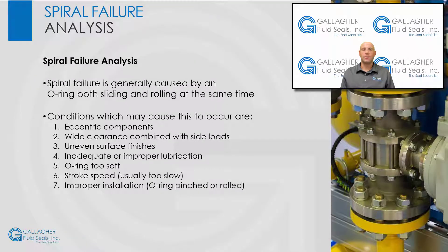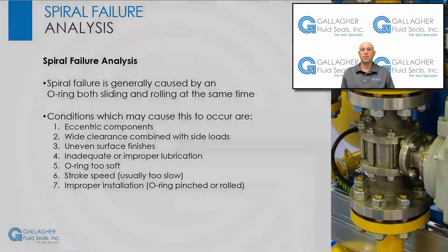Spiral failure is generally caused by an O-ring both sliding and rolling at the same time. Conditions which may cause this to occur are eccentric components, wide clearance combined with side loads, uneven surface finishes, inadequate or improper lubrication, the O-ring is too soft, the stroke speed which is usually too slow, and improper installation such as the O-ring being pinched or rolled.